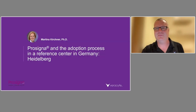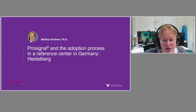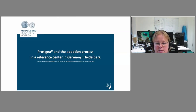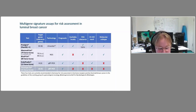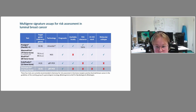Hello, I'm Martina, a biologist, and I'll report about the adoption process in our lab. We have been ProSigna users for five years. For risk assessment in luminal breast cancer, there are currently four gene expression tests available in Germany, one of which is the ProSigna assay. It's the only test that can identify molecular subtypes, it's locally available, CE marked and FDA approved — many advantages for us to use it in our lab.